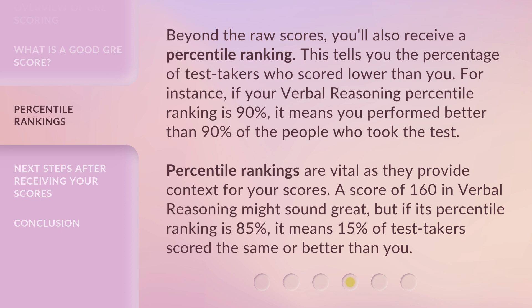Beyond the raw scores, you'll also receive a percentile ranking. This tells you the percentage of test takers who scored lower than you. For instance, if your verbal reasoning percentile ranking is 90%, it means you performed better than 90% of the people who took the test. Percentile rankings are vital as they provide context for your scores. A score of 160 in verbal reasoning might sound great, but if its percentile ranking is 85%, it means 15% of test takers scored the same or better than you.